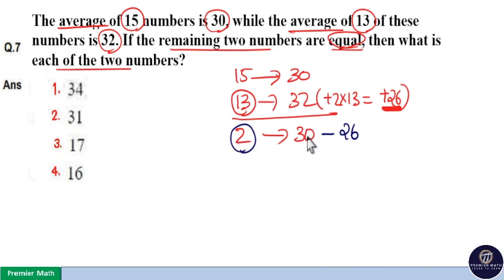But here we are finding the average of two numbers. So to find the average, distribute this 26 to two numbers and subtract it from 30. Now, 2 goes 13 times in 26. 30 minus 13 is equal to 17. So average of two numbers is 17, means two numbers are 17.